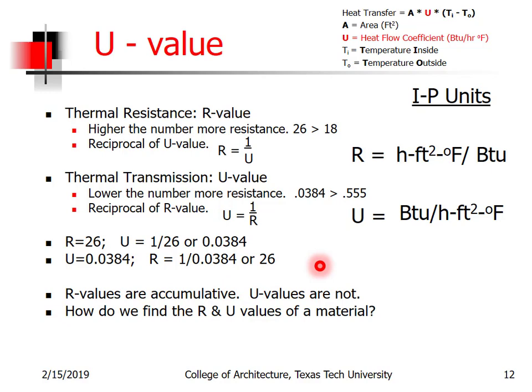R-values are cumulative — we can add them or multiply them together. If we have three materials each with an R-value of 5, we can multiply 5 times 3 to get a total R-value of 15.